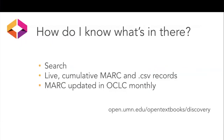How do you know what's in the library besides poking around? You saw the search box in the top right on our library page. We also have cumulative MARC and CSV records, and those are live — as soon as we add a book to the library, that book is in our MARC records. Feel free to come up with whatever schedule or system you'd like to use locally to update your records based on our MARC files. We also include our MARC records in OCLC, but those are not live — they are updated at around the beginning of every month.